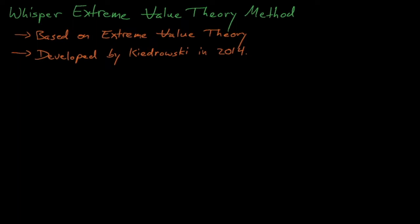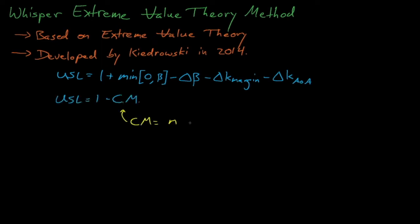Rather than computing bias estimates in USLs like traditional USL methods, WISPR opts to instead calculate the calculational margin, Cm, which accounts for the subcritical margin and delta-k AOA, but in place of the computational bias estimate, it computes a margin, m, that guarantees that the application will be sufficiently subcritical.